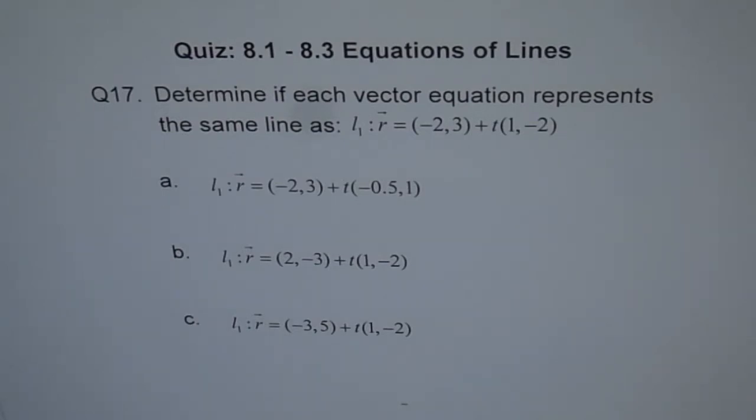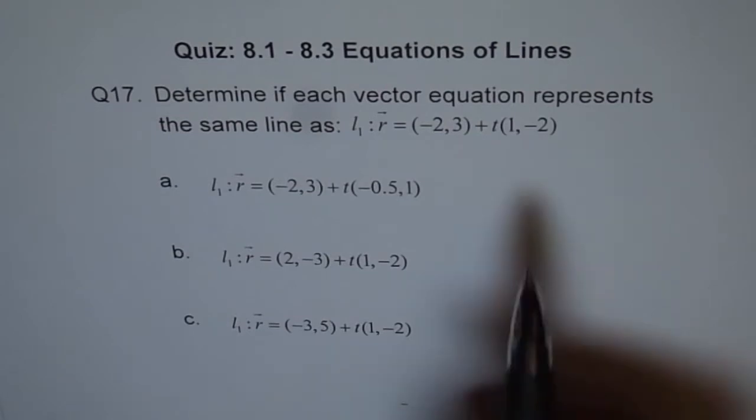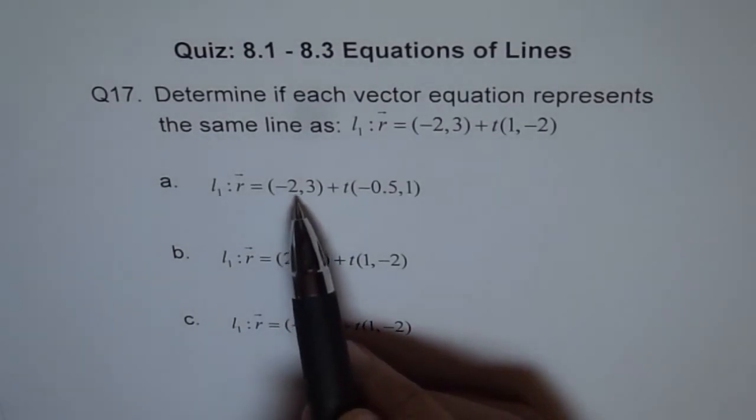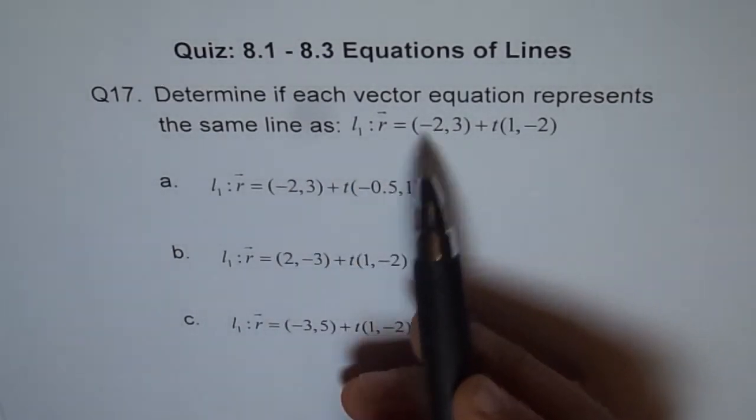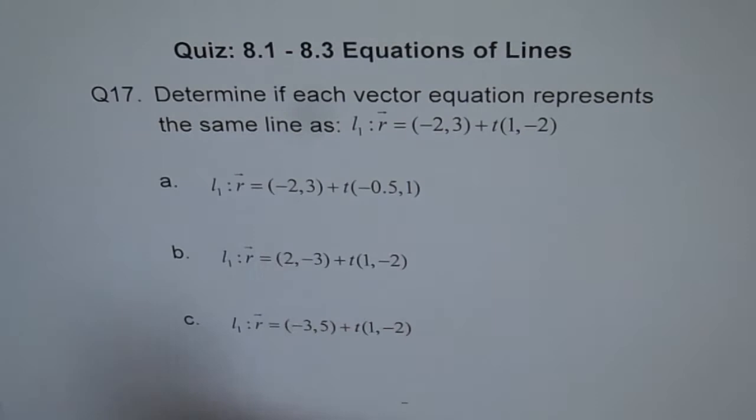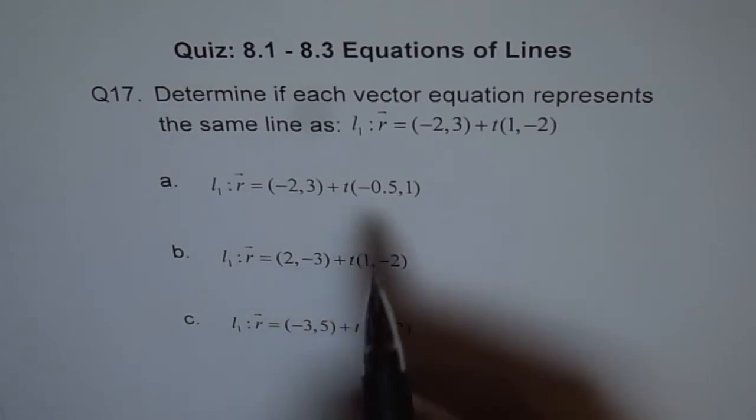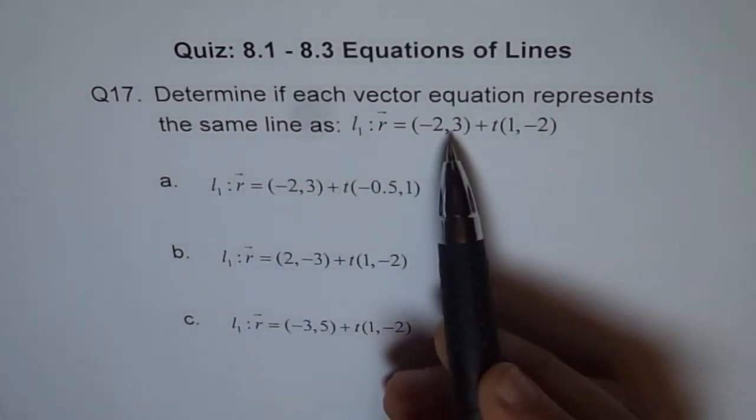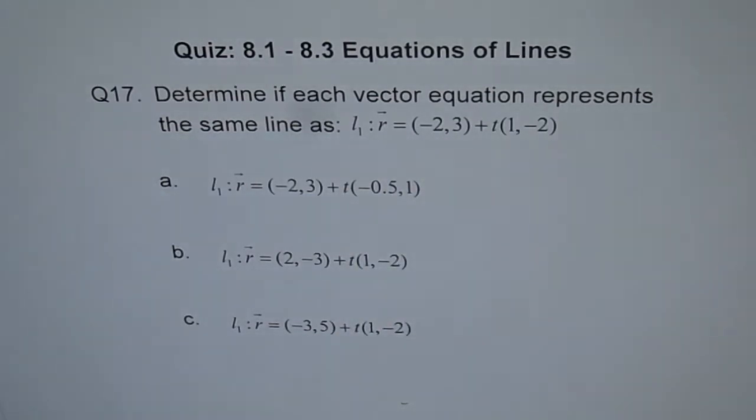Same line means what? First thing is the direction vector should be the same. Then you have to check if the given point on the line lies on this line. So the line should be parallel and coincident. That means this point should lie on the given line. Otherwise, it could be parallel but not the same line.